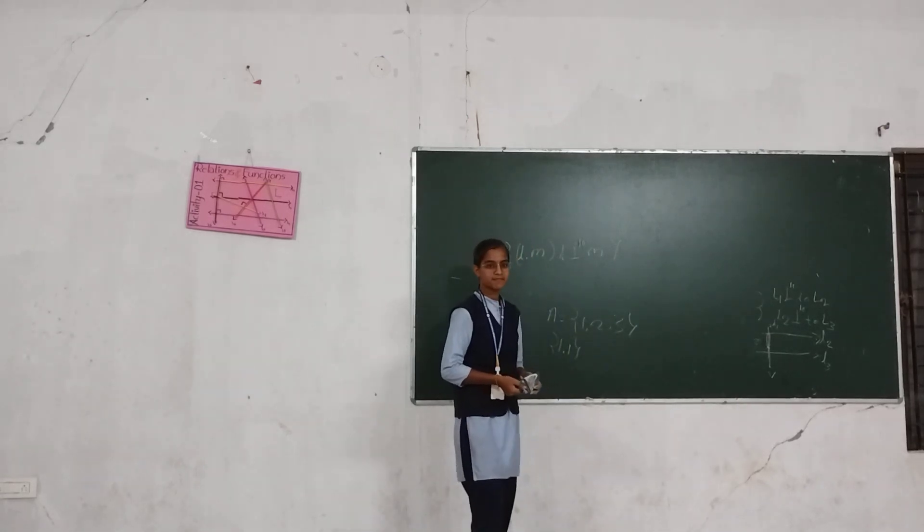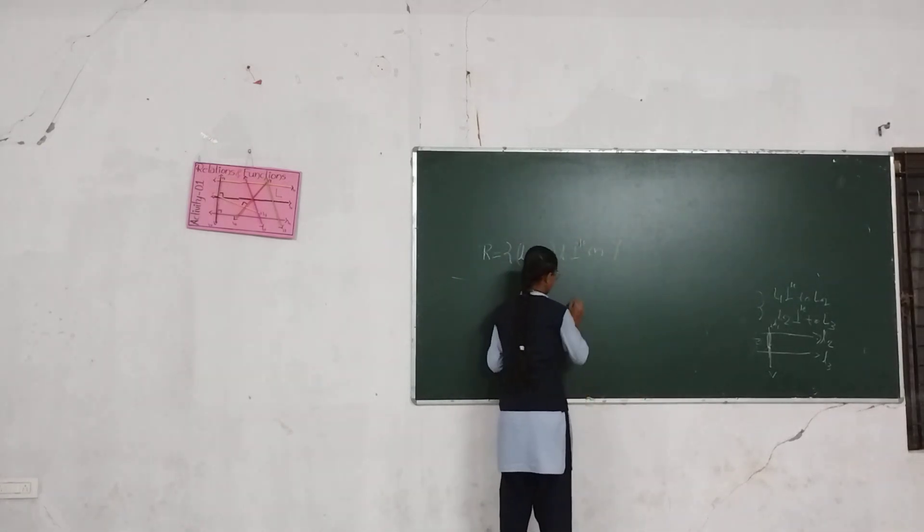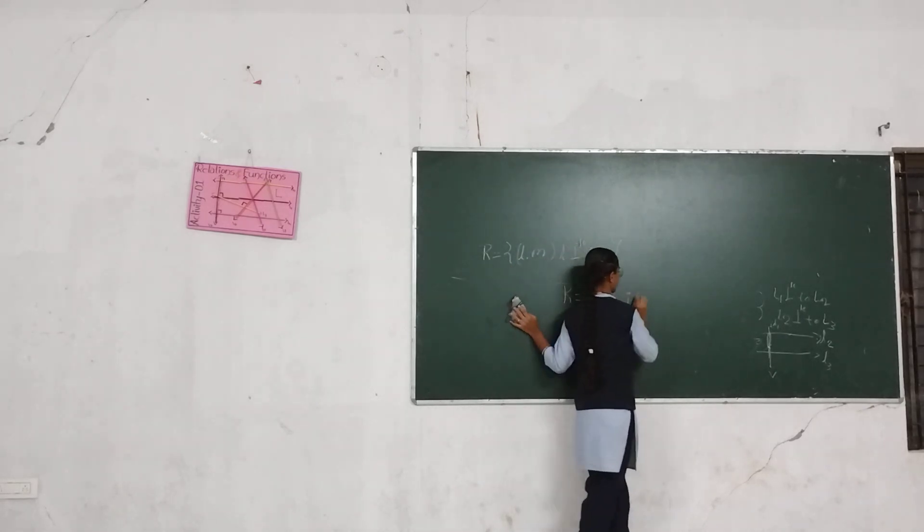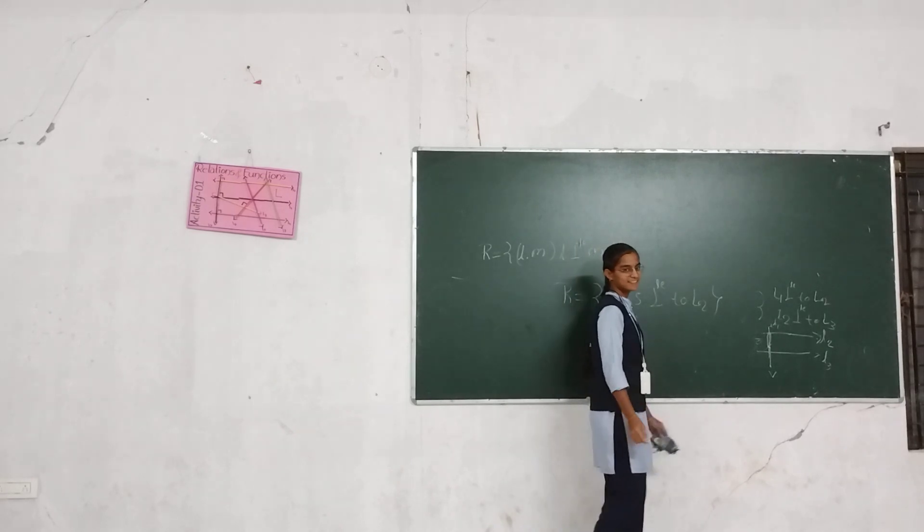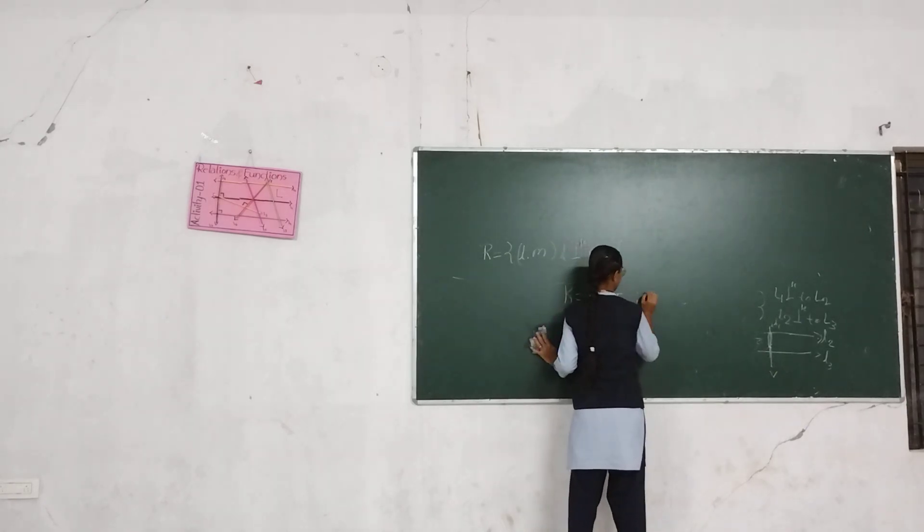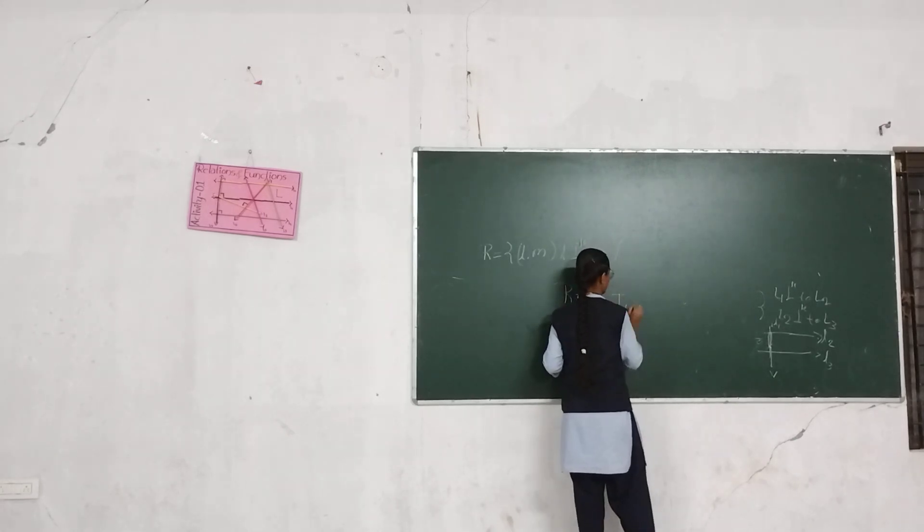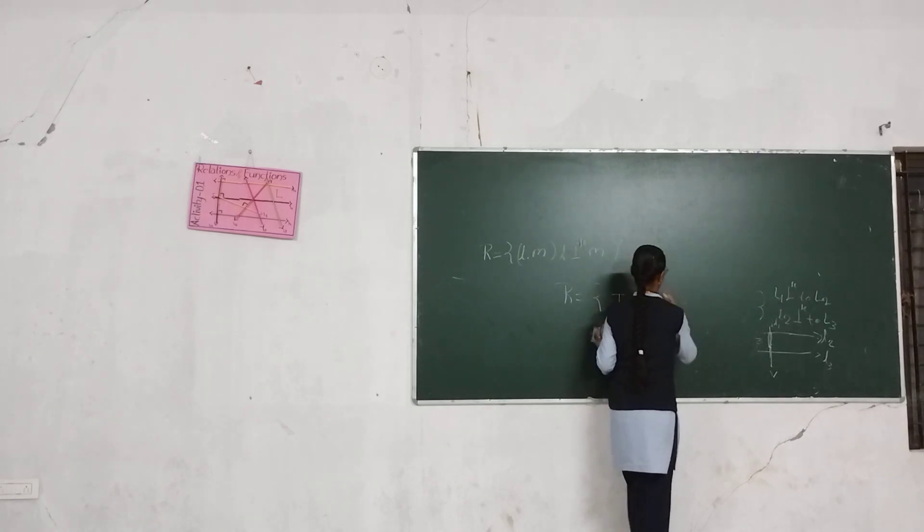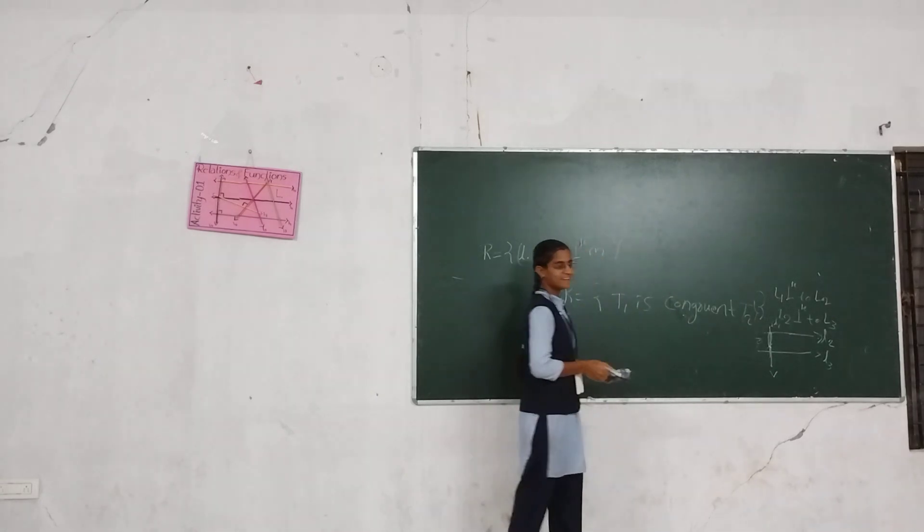I will give an example for a relation which is symmetric only. The relation is the element is perpendicular to. I will give another example. T1 is complementary to T2, this is symmetric only.